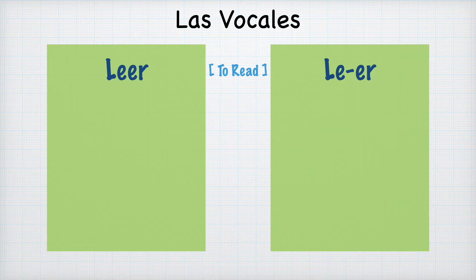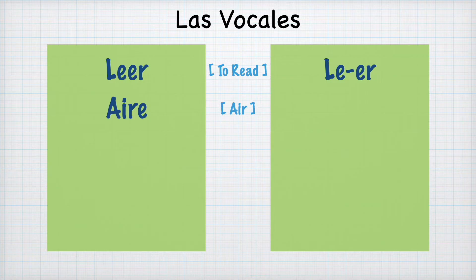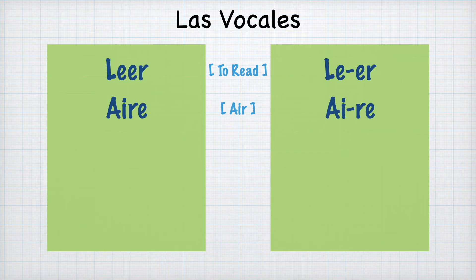A strong vowel next to a weak vowel in any order makes a diphthong, so they are part of the same syllable. For example, aire: A and I are together because A is strong and I is weak. Then we have the second syllable, RE. You still pronounce all the letters — with the AI it's just a little bit quicker. Aire.